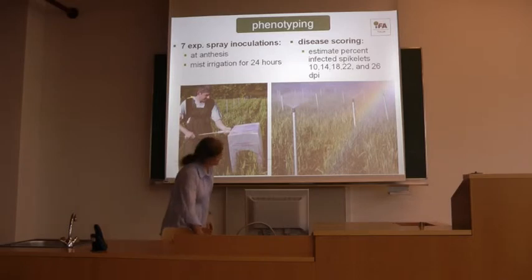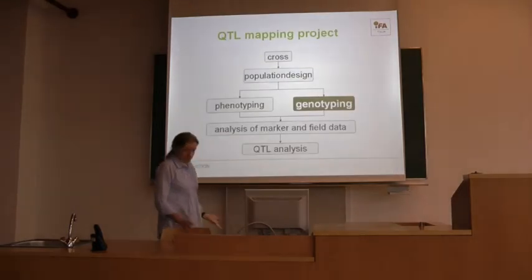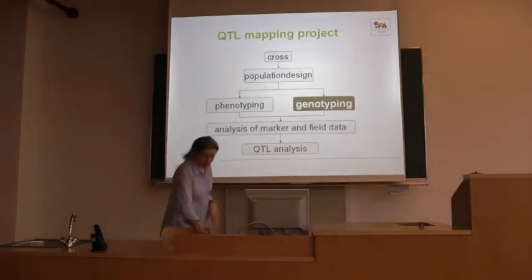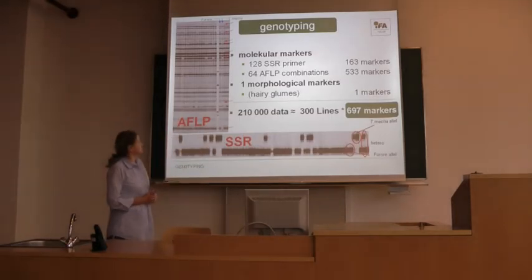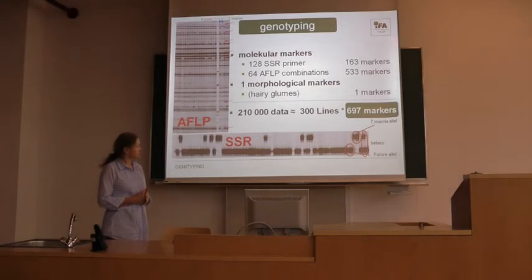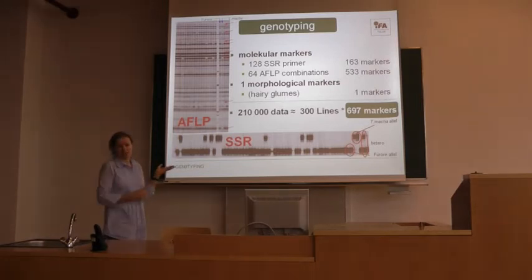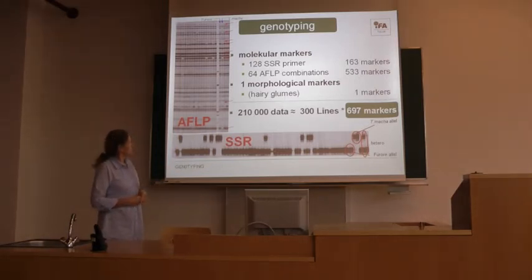The same material is genotyped — this was done in our lab. We used SSR markers in combination with AFLP markers, and we had around 700 markers per line. These techniques change very frequently, but it does not matter which technique you choose — you just have to get the information for each line about which genome region is derived from which parent.